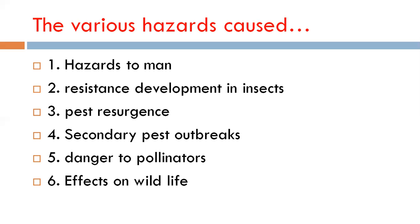Secondary pest outbreaks are also a major hazard caused by pesticides. When broad-spectrum, highly toxic chemicals are used, the major pests are controlled, but the minor pests present in the field are not targeted. Since non-target pests and non-target animals are also destroyed by pesticides, the minor pest becomes a major one — this is called a secondary pest outbreak.